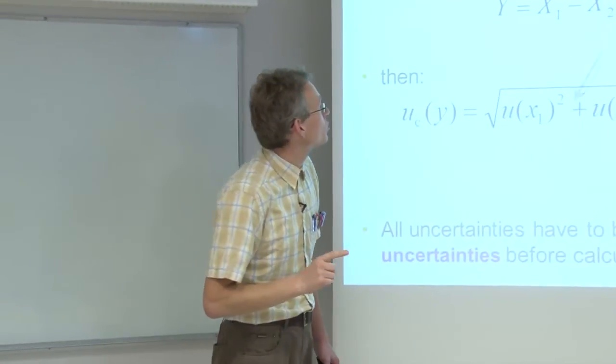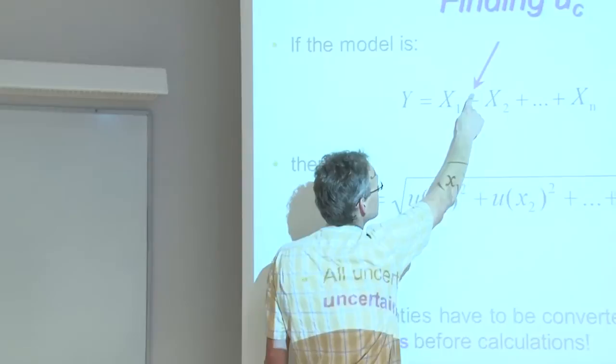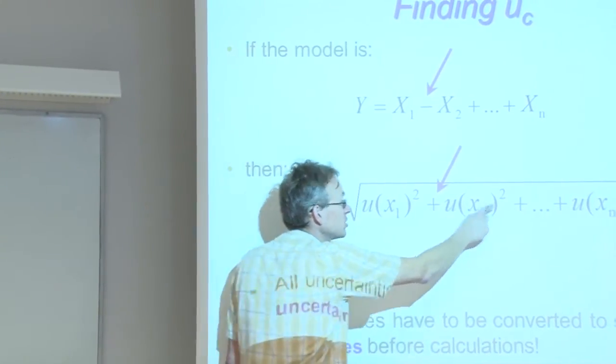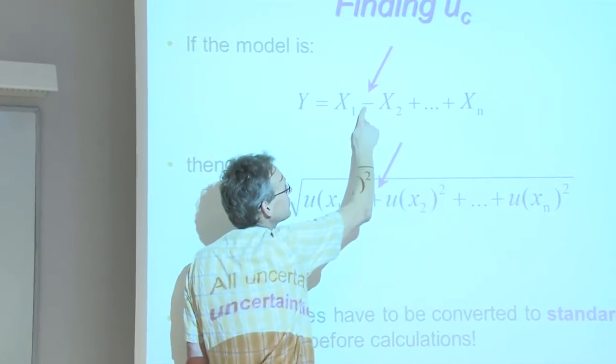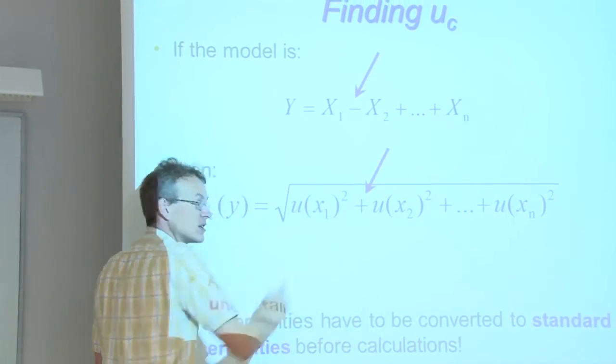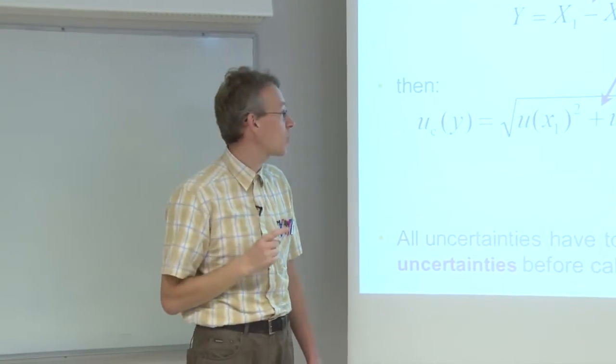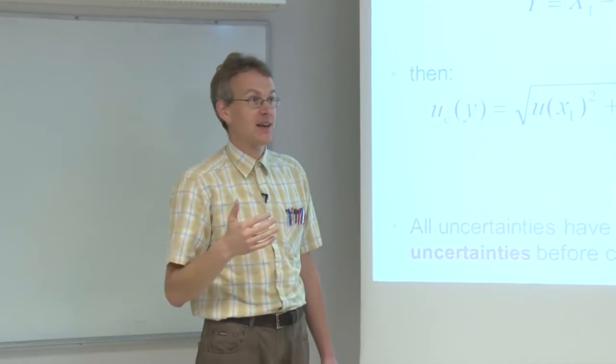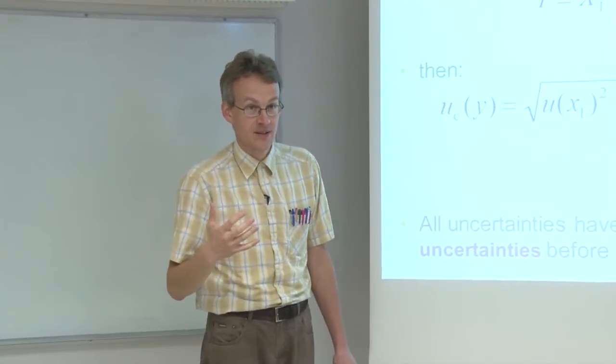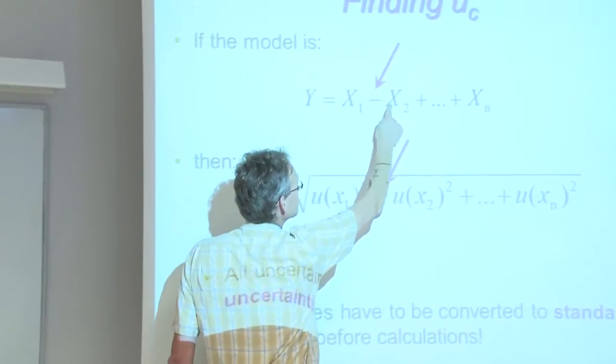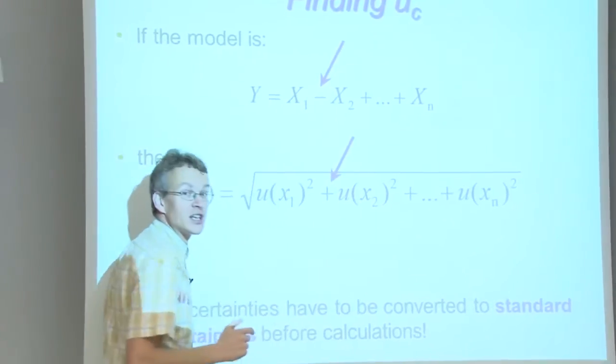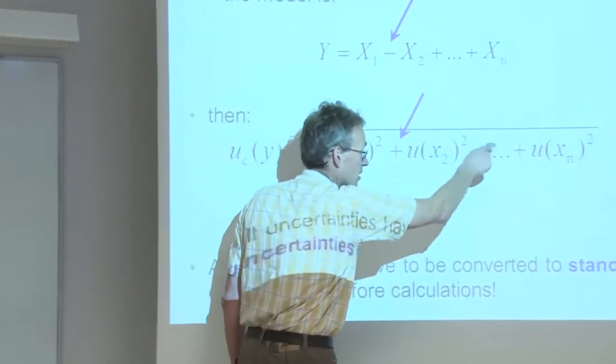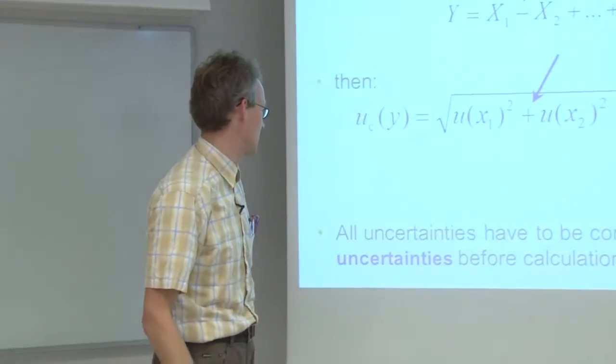It is important to note that even though we have here subtraction and here addition, we nevertheless always write additions here. So it does not matter whether it is plus or minus, here it will always be plus. And of course it is easy to follow that this is correct way of doing, that all these quantities of course need to have the same units. Only then it is allowed to combine their standard uncertainties as this.